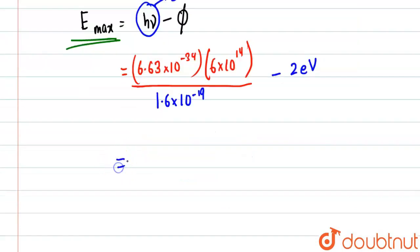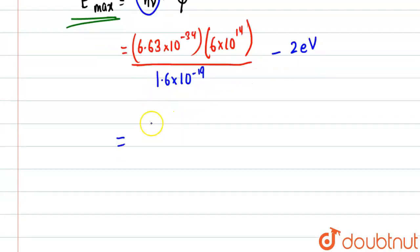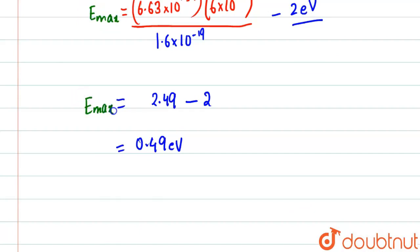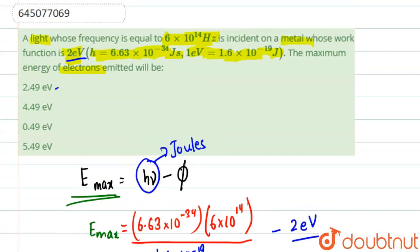So finally, after doing the calculation, this comes out to be 2.486 electron volt, which we can write as approximately 2.49, minus 2. So what we have is 0.49 electron volt. So maximum energy, E_max, was found to be 0.49 electron volt. That means our answer is option number C, which is 0.49 electron volt.